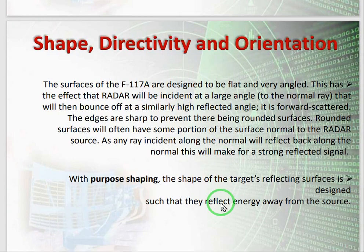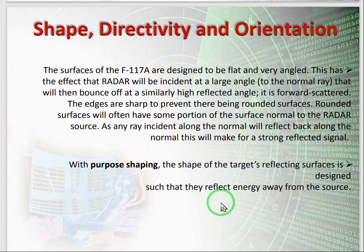The second phenomenon is shape, directivity, and orientation. Here we studied that the signal should not be reflected in order to avoid identifying the object. For this reason, the shape of the stealth aircraft should not have sharp edges — they should have round surfaces, by which we can minimize the reflection of the signal.